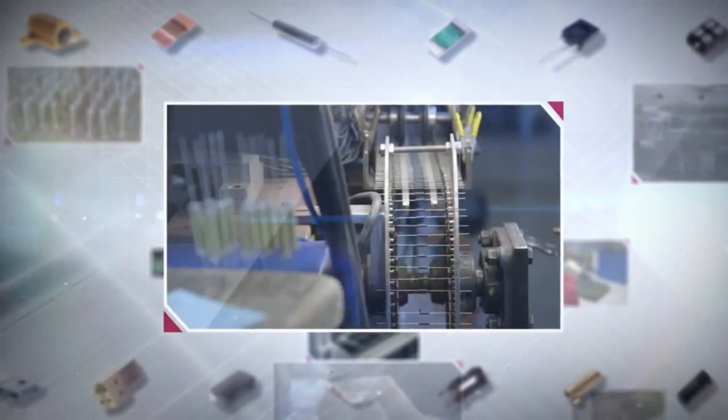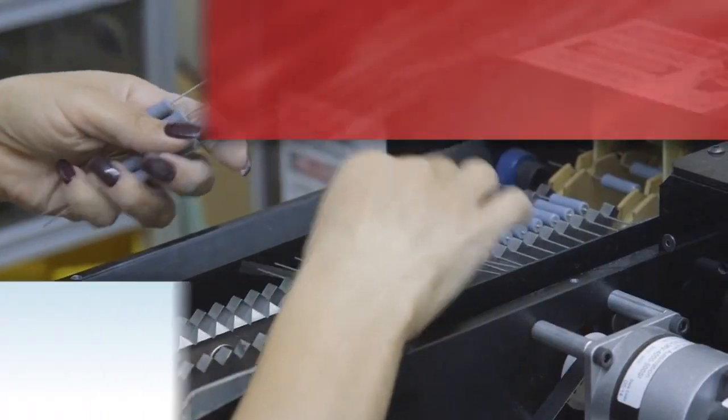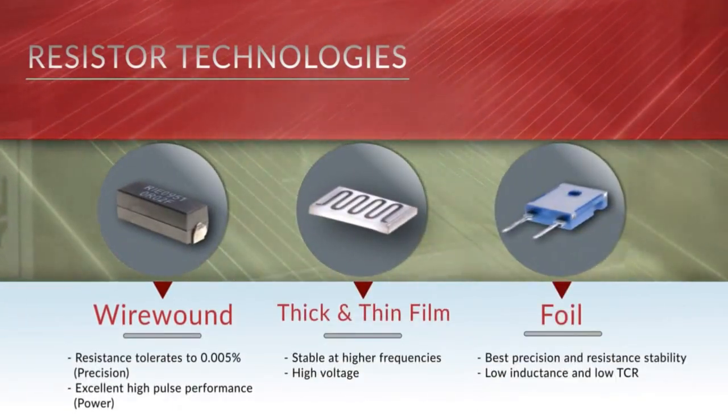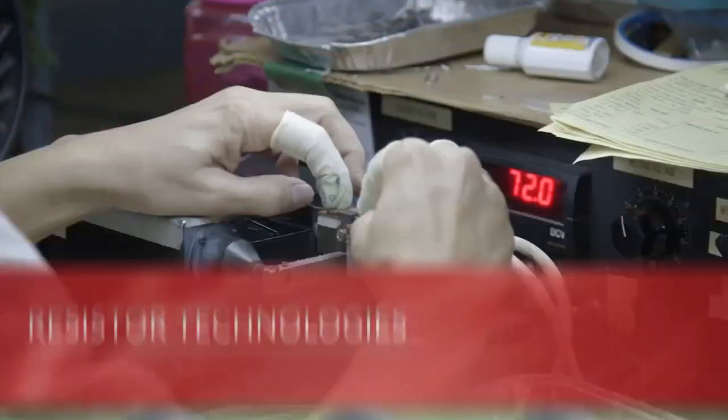For more than 45 years since our formation in 1960, Riedon has been at the cutting edge of resistive solutions. This is evident today in our wire wound, thick and thin film, and foil resistive products.